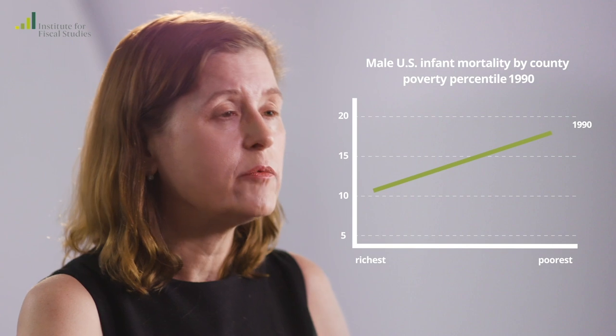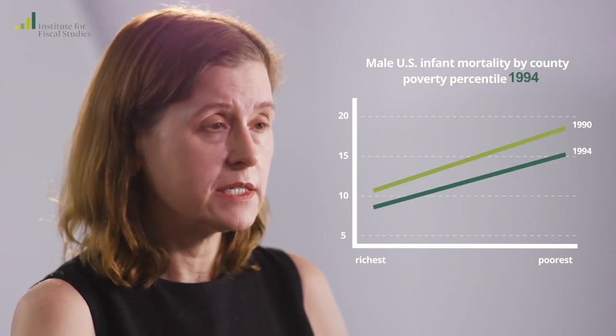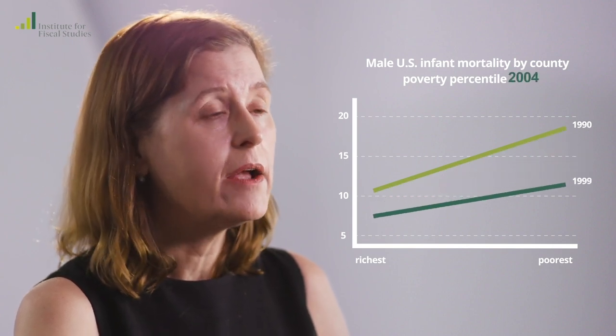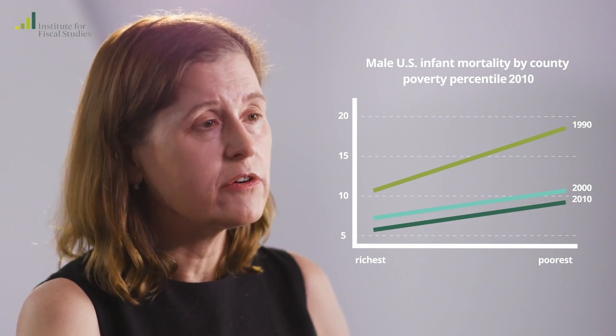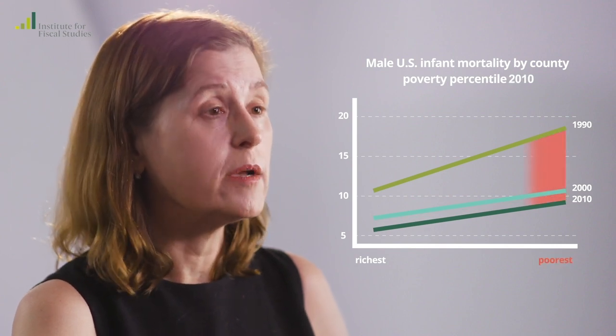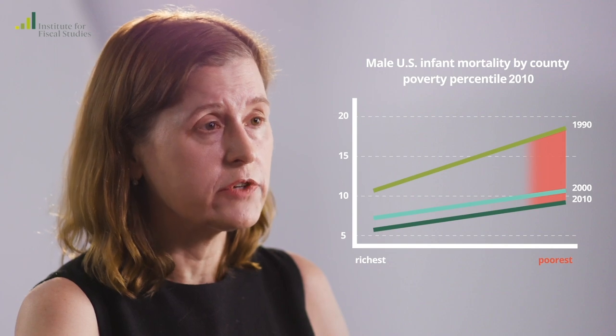For older people, we have either flattening of those mortality declines, or even for some groups, like middle-aged women in the U.S., we have increases in mortality for the first time in a century. But for children, we continue to have these very big declines in mortality, and the declines are not spread evenly across groups — they're occurring more for the poorest children.